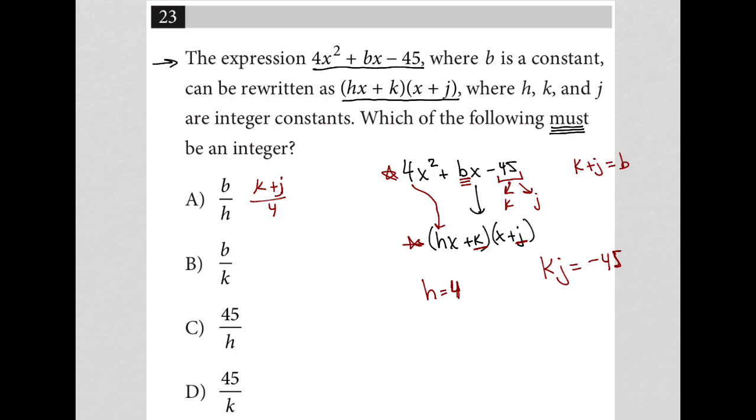How about choice B? b over k. Well, again, I know this is k + j. So dividing by k is not going to give me a factor, unless j is a multiple of k. If I were to simplify this, this would turn into 1 + j/k. So I'm assuming that this would be a fraction.